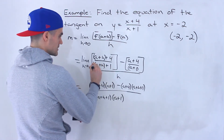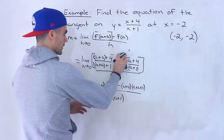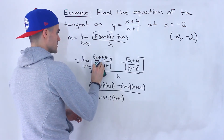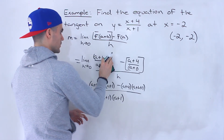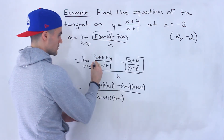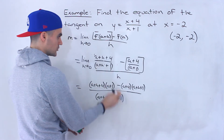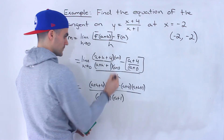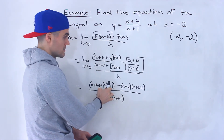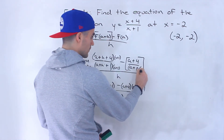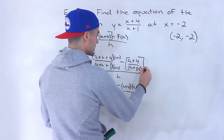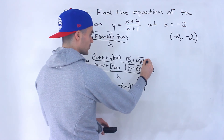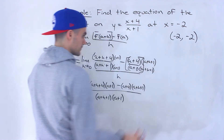Let me clarify — there are a lot of brackets here. The (a + h + 1) term gets multiplied by (a + 1) to form the common denominator, so the numerator (a + h + 4) must also be multiplied by (a + 1). Similarly, the (a + 1) term gets multiplied by (a + h + 1), so (a + 4) must also be multiplied by (a + h + 1).